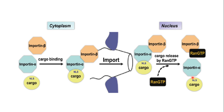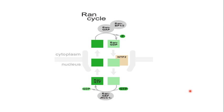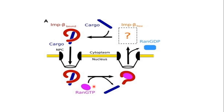Inside the nucleus, Ran-GTP interacts with importin beta, so importin beta is removed from the complex. To release the cargo from importin alpha, there is an auto-regulatory region in importin alpha which mimics the structure of the NLS of the cargo. After removal of importin beta, this auto-regulatory region gets exposed and binds to the NLS binding site of importin alpha, releasing the cargo into the nucleus. In the Ran cycle, Ran-GTP moves into the cytoplasm and is converted into Ran-GDP, which is transported back into the nucleus by the NTF2 receptor, where Ran-GEF converts it back to Ran-GTP.